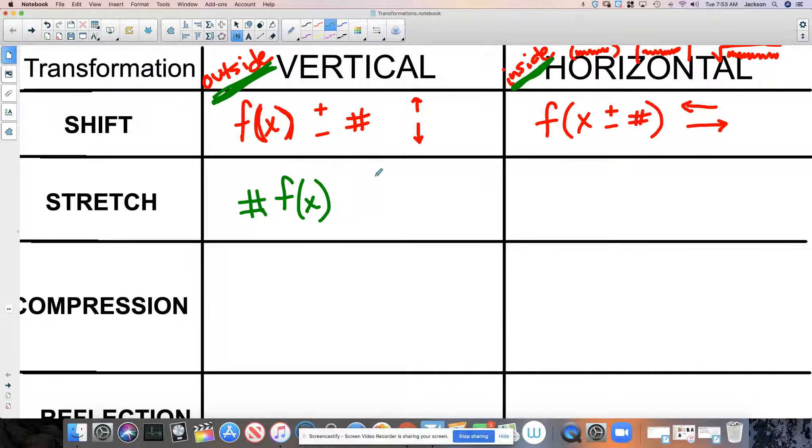Just like we said with our vertical shifting, if the number that we're multiplying by is greater than 1, that's a stretch, right? When this number is 5, so just as a very quick example.